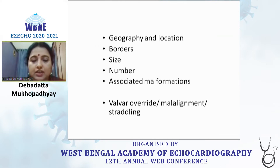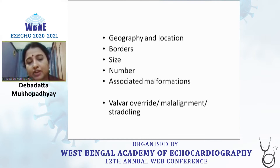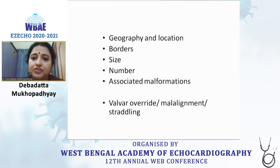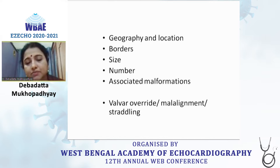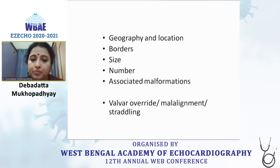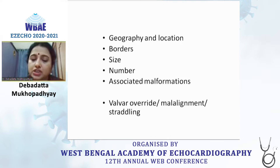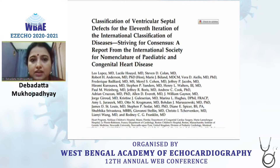This child had to be operated. The most important things to look for even in a mundane case of VSD would be the geography and location, the borders, the size, the number, as well as any associated malformation such as coarctation, valvar override, mal-alignment, or straddling — especially in cases of tetralogy, DORV, or single ventricular complexes.